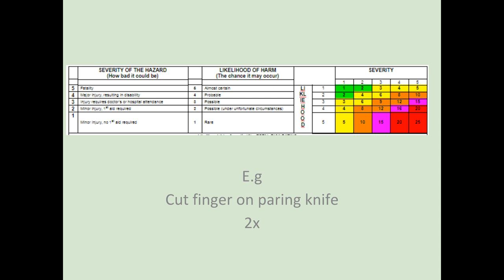This is the common framework or grid system used to give a risk rating to a hazard. We look at how severe something is — fatal being the worst, minor injury being the least — and likelihood of harm, with five at the top being almost certain and rare at the bottom. We multiply them together to get a rating. For example, cutting a finger on a paring knife might be a minor injury requiring first aid, and the likelihood possibly two, giving a rating of four — in the amber range.